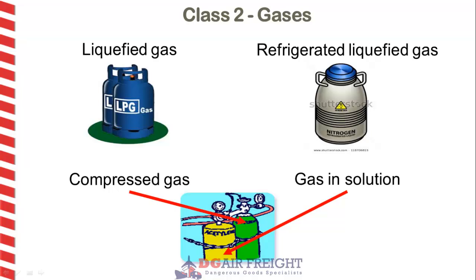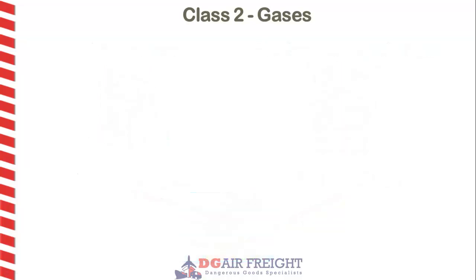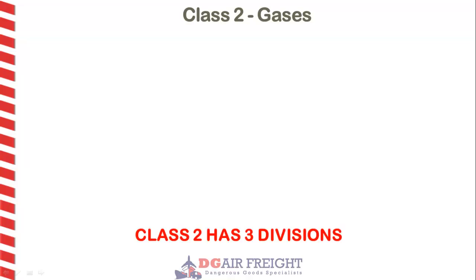Gases are dangerous goods for a number of reasons, the main one being that they are under pressure and could explode if involved in a fire. They are assigned to one or more of three divisions, depending on the hazard that they present.